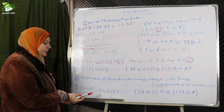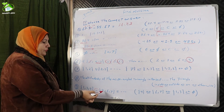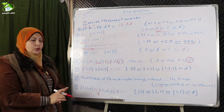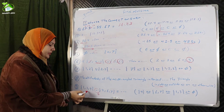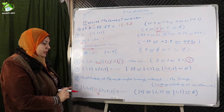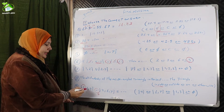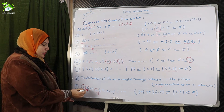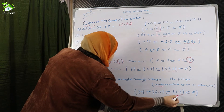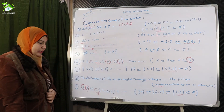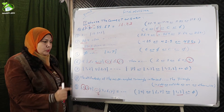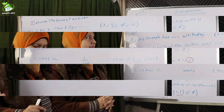Number nine: the set {1, 3, 4} difference the set {4, 6, 7}. The difference means I will write all elements in the first set that do not exist in the second set. One and three exist in the first set and do not exist in the second set. So the answer will be {1, 3}.